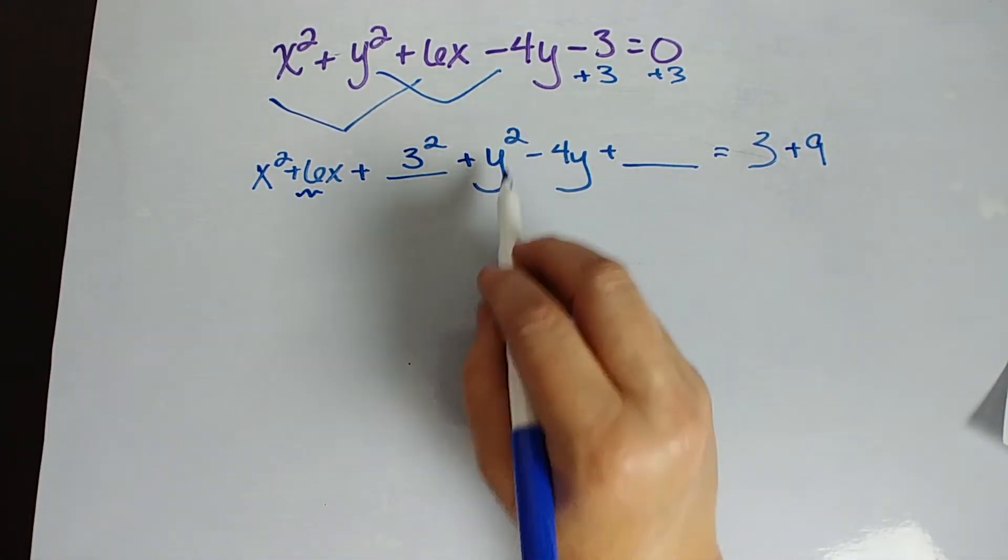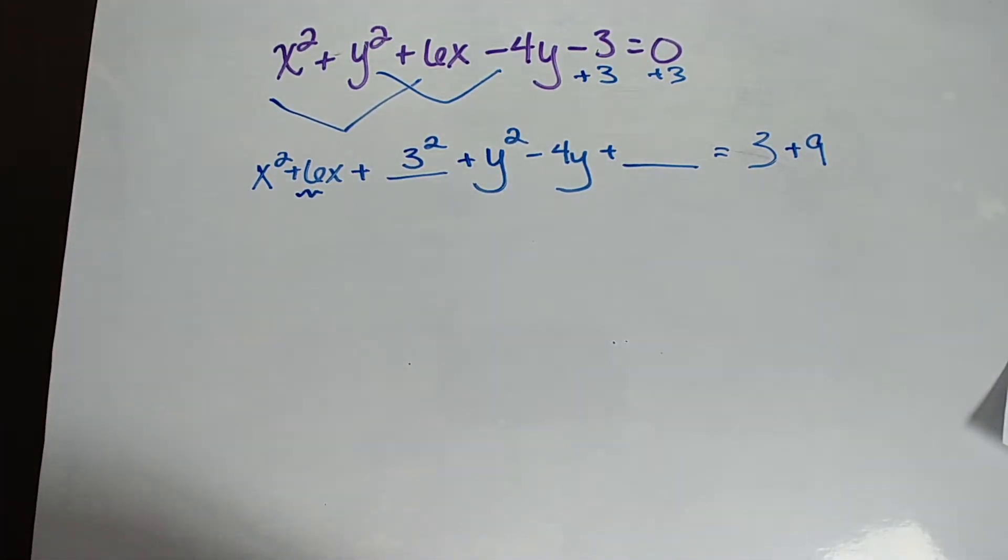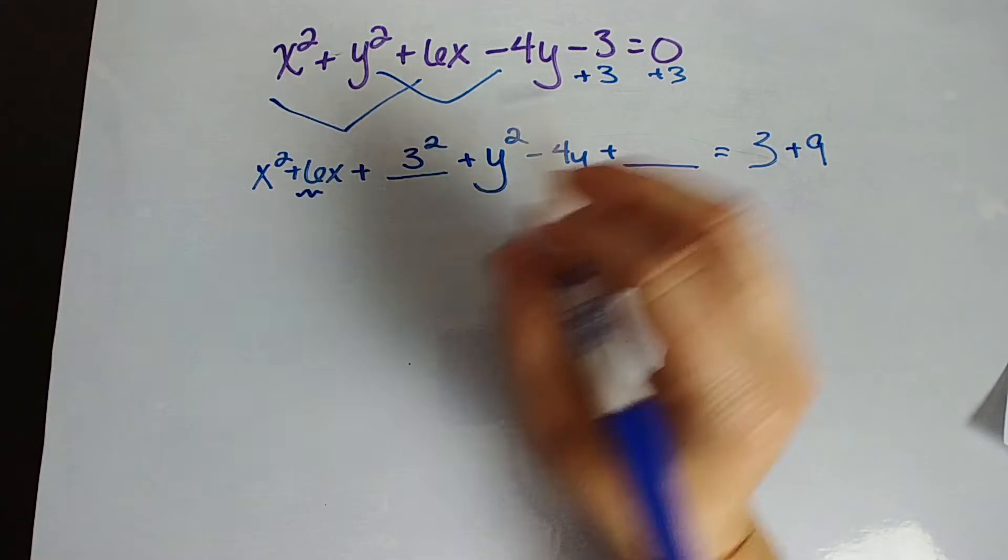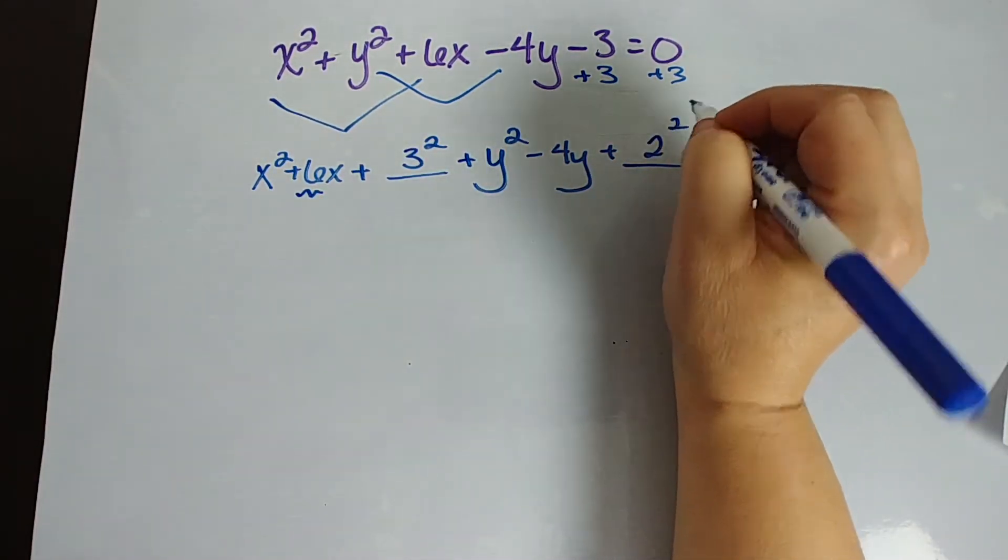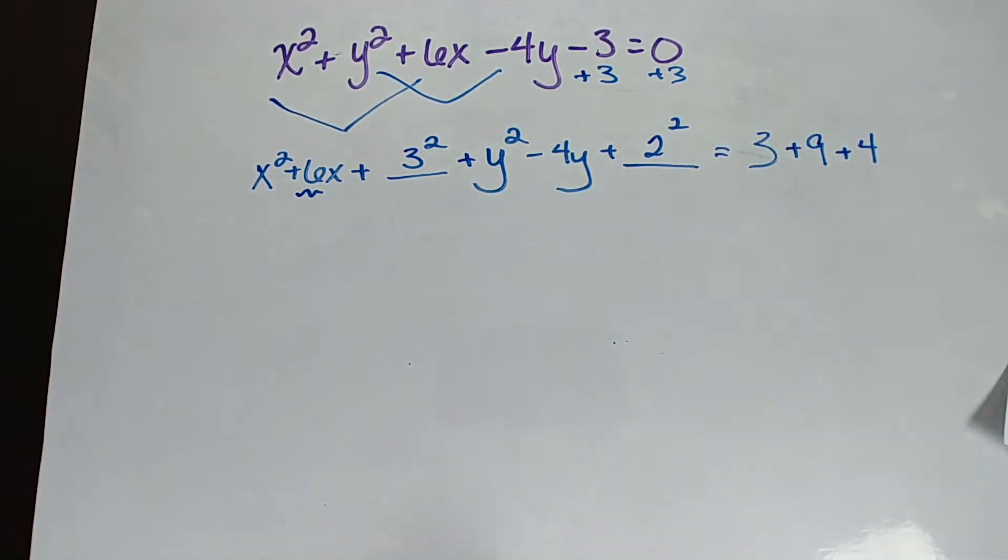We're going to do the same thing here. I want a perfect square trinomial for this trinomial. So our linear term, the thing multiplied to y is negative 4, but we're going to square it. So this is one case where I don't care that it's negative. Half of 4 is 2. 2 squared is 4. So we've added it to the left side of the equation. We have to add it over here. I know that it hasn't gotten better yet, but it will. I promise.